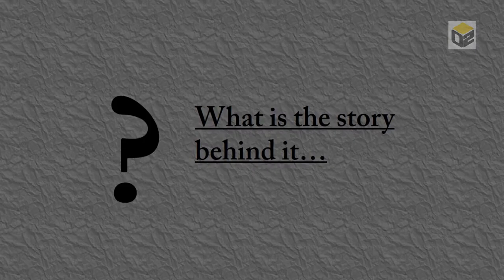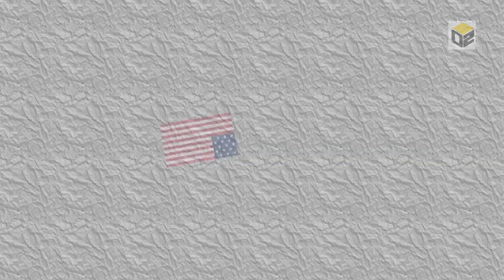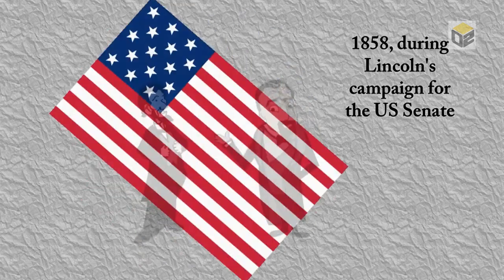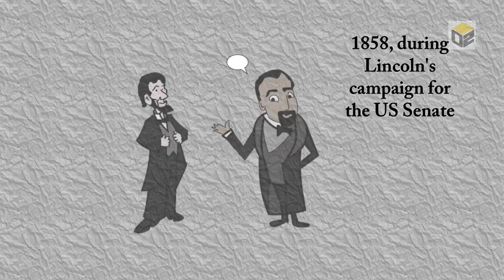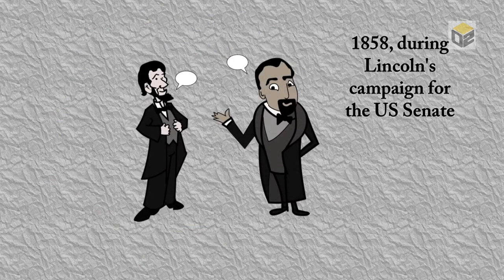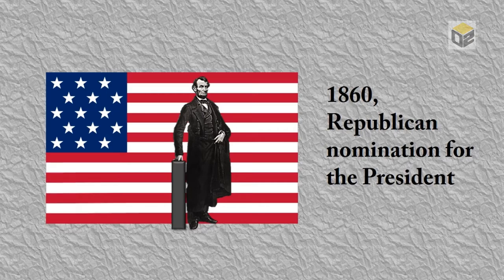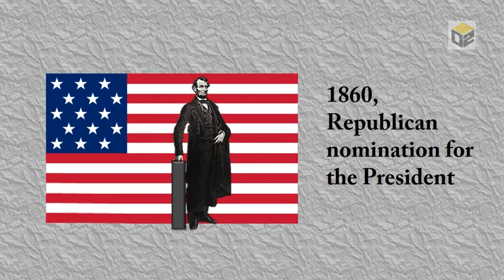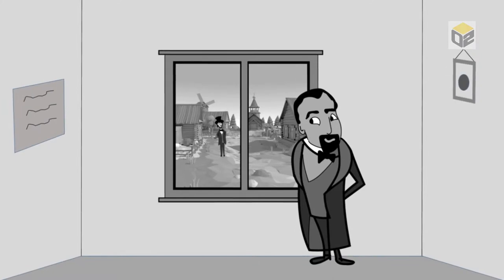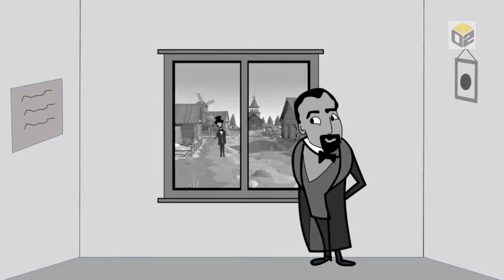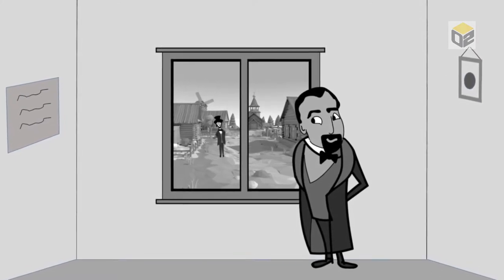So what is the story behind it? In 1858, during Lincoln's campaign for the U.S. Senate, sculptor Leonard Volk met him and invited him to sit for a bust. Though Lincoln first agreed, two years passed and he didn't appear. Later, in the spring of 1860, shortly before he received the Republican nomination for president, he visited Volk's studio.